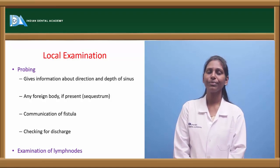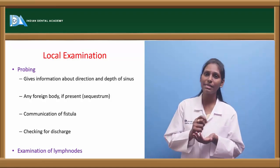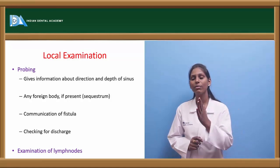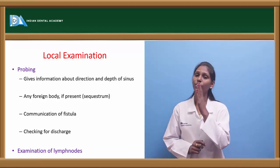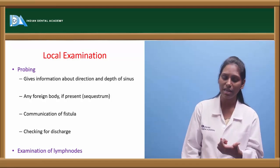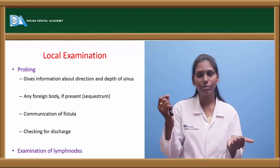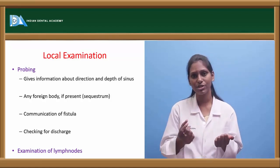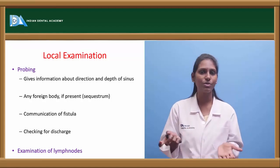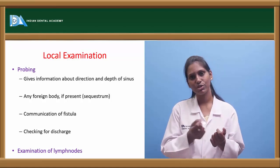Coming to local examination — probing gives us good insight into what kind of fistula or sinus it is. It gives information about direction and the depth of the sinus. After removal of the probe, you can check for discharge — whether there is pus, serous or watery discharge, or sometimes no discharge at all.